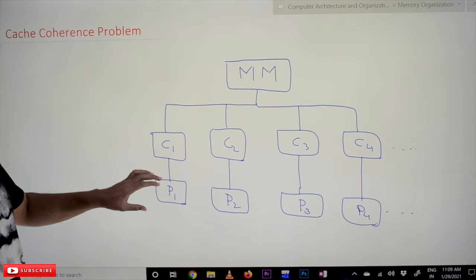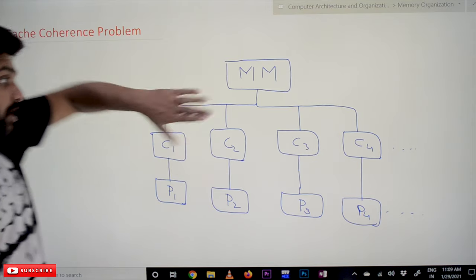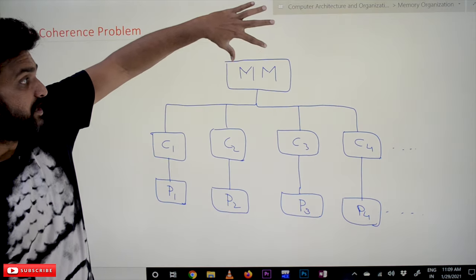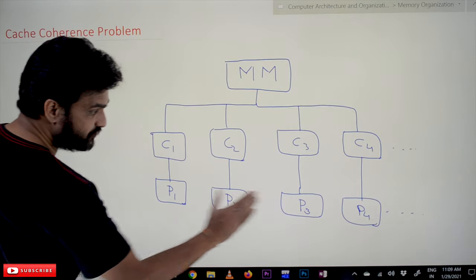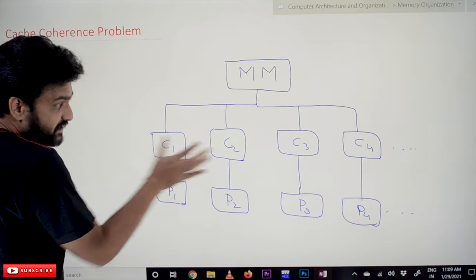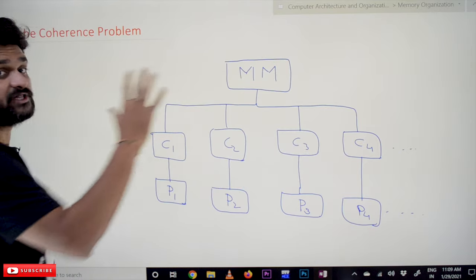Whenever multiple processors with independent cache memories are trying to access some common main memory, then we are going to get this problem. So the problem is cache coherence problem.